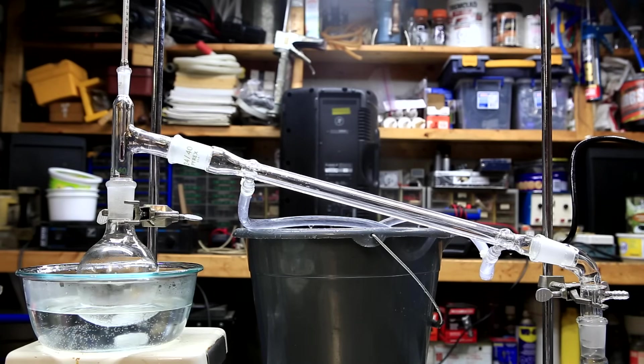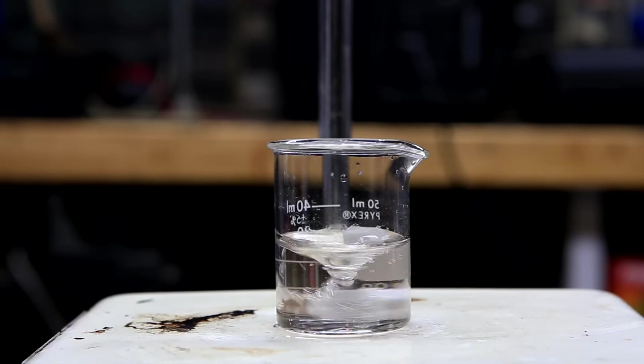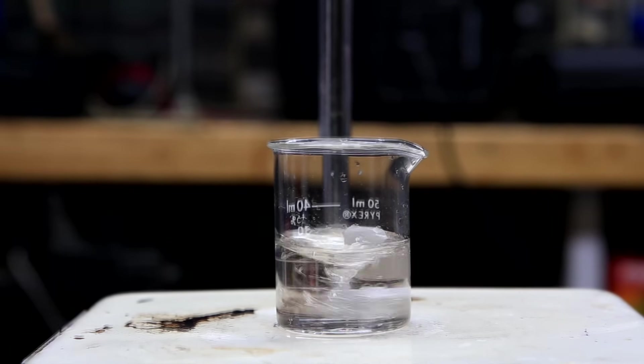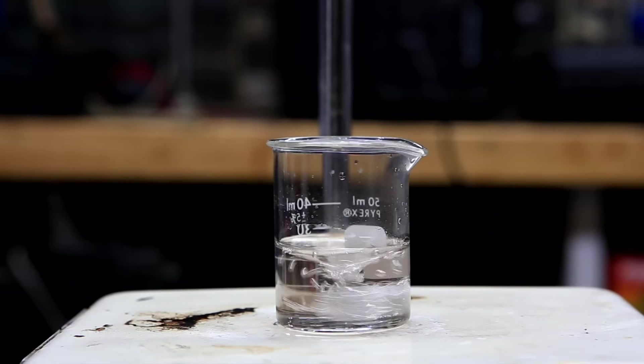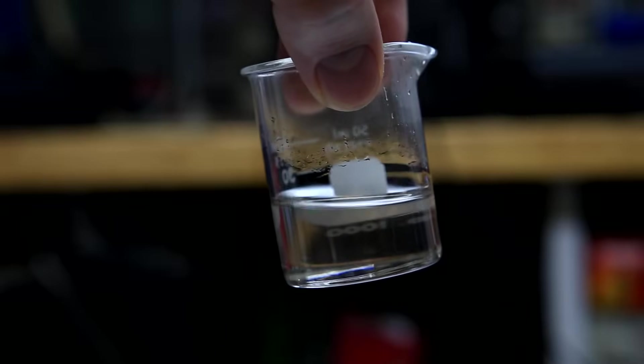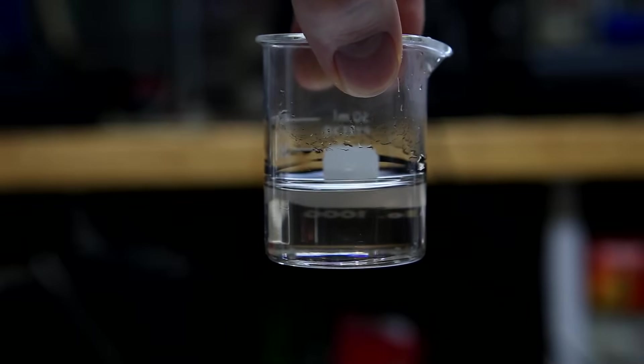Now the final step was to remove the methanol and for this I used a simple distillation. Before it came too viscous, I transferred it to a small beaker and evaporated the final amount of methanol. I heated it to about 110 C for 30 minutes to make sure that it was dry. This was the final nice clear glycerin product.